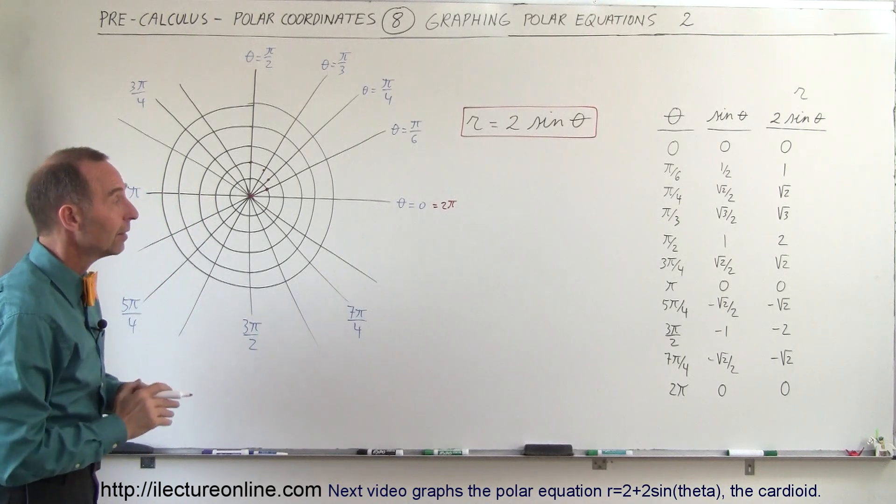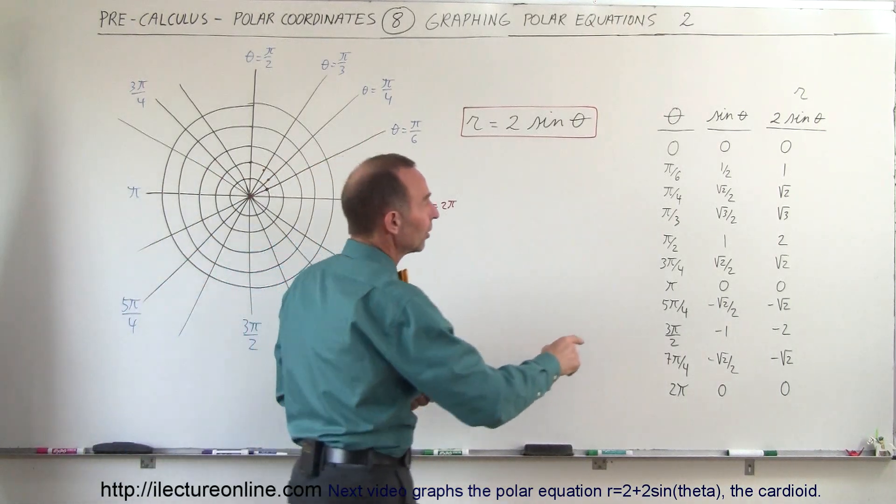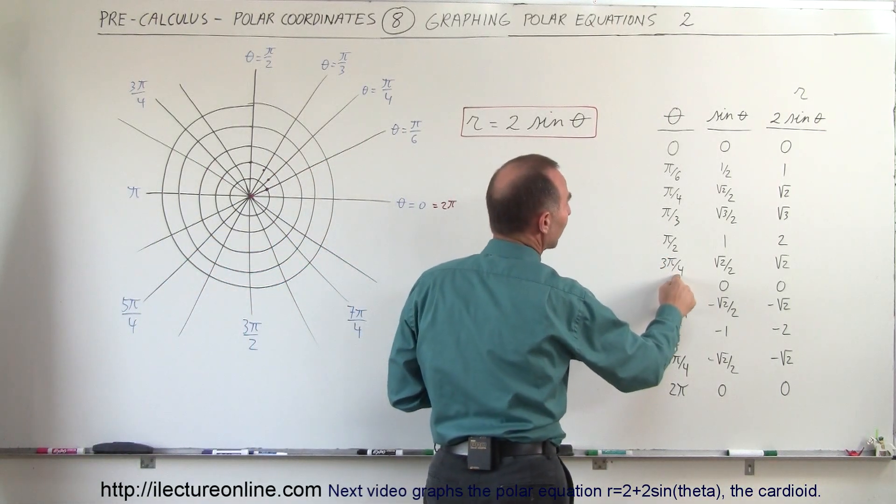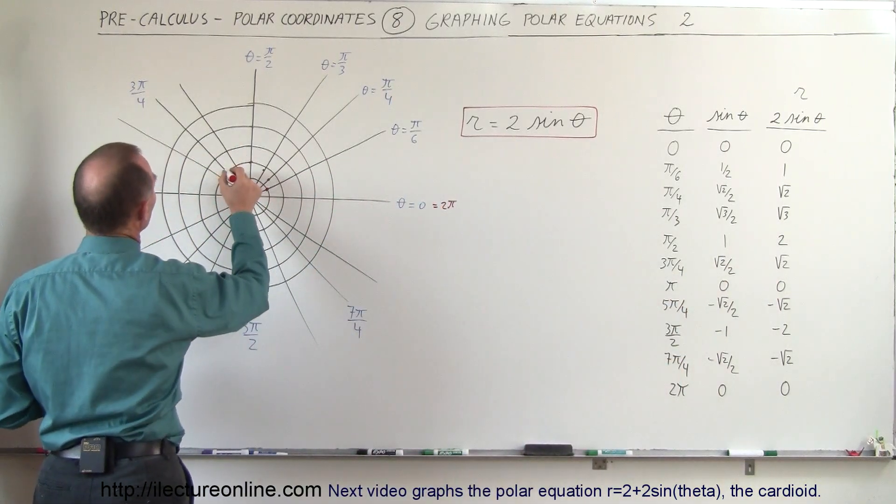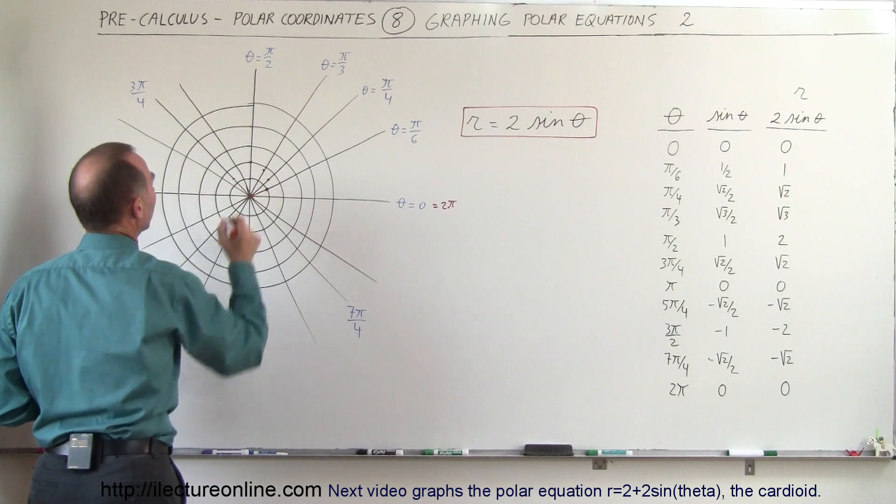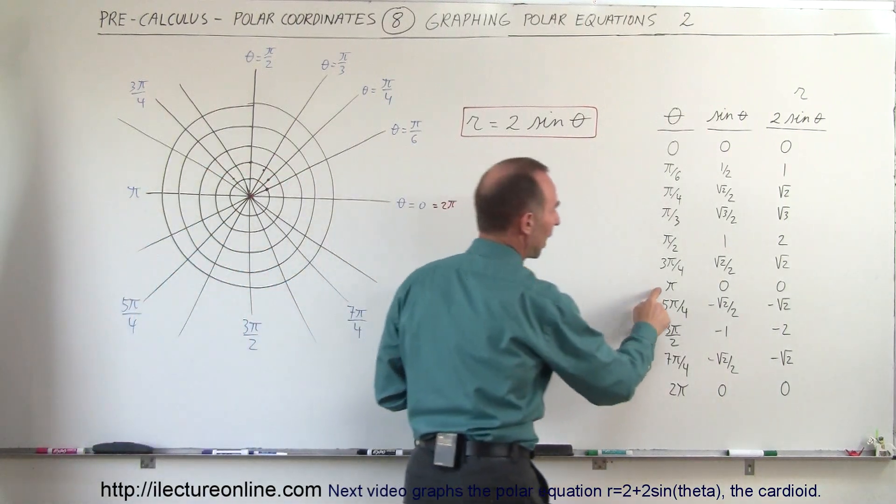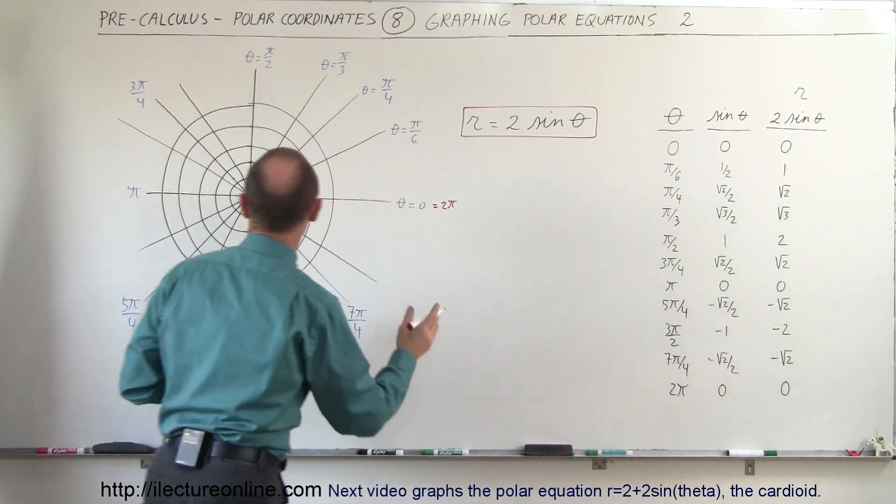Continuing on, let's go a little bit faster now. We go all the way to 3π divided by 4, we have the square root of 2. So 3π divided by 4, that would be this line, square root of 2 is right there.